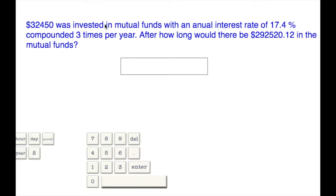$32,450 was invested in mutual funds with an annual interest rate of 17.4% compounded three times per year. After how long would there be $292,520.12 in the mutual funds?